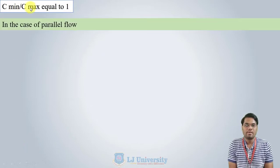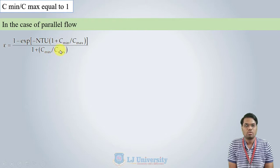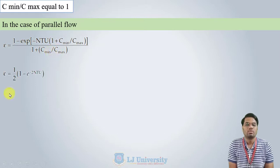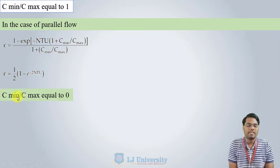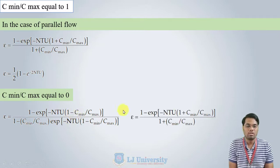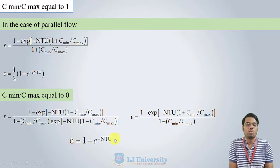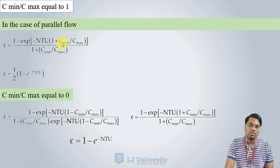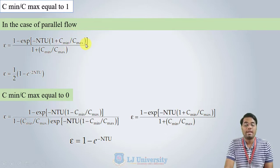When C_min/C_max = 1 for the parallel flow heat exchanger, substituting gives 1 + 1 = 2 in both numerator and denominator terms, so ε = (1/2)·[1 − exp(−2·NTU)]. For the second limiting case, when C_min/C_max = 0, both the counter flow and parallel flow equations reduce to ε = 1 − exp(−NTU).